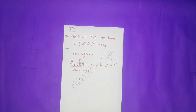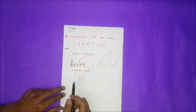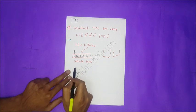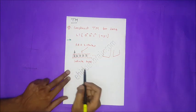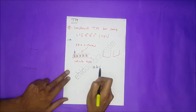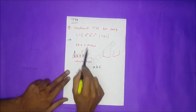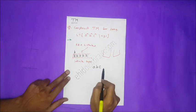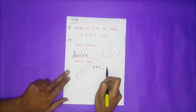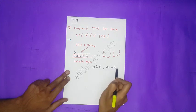Now let's see the notations. The language is aⁿbⁿcⁿ. The minimum length string is A, B, C when n=1. The next possible string is A, A, B, B, C, C, and so on — infinitely many strings are possible.